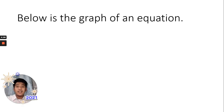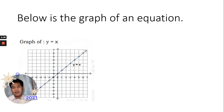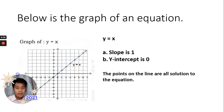Below is the graph of an equation — y = x. As you can see, it is just a diagonal solid line, meaning all the points lying on that line are solutions to the equation. The slope is 1 and the y-intercept is 0. The points on the line are all solutions to the equation.